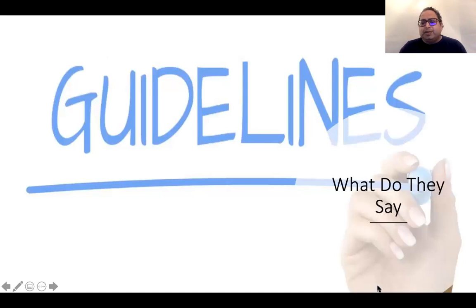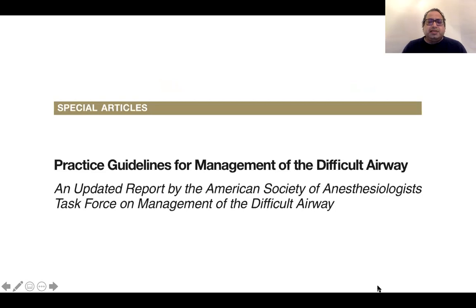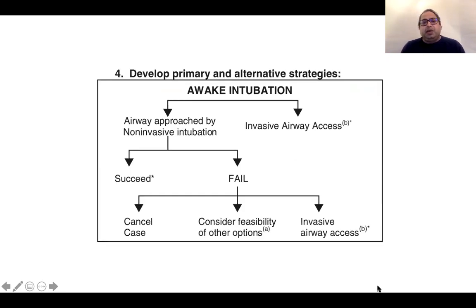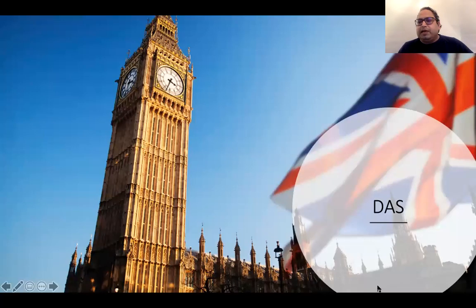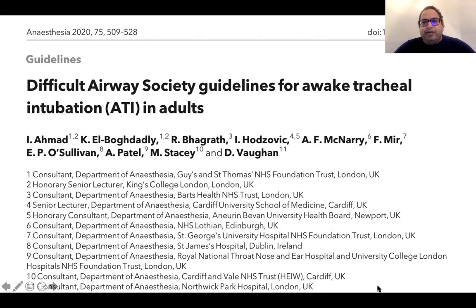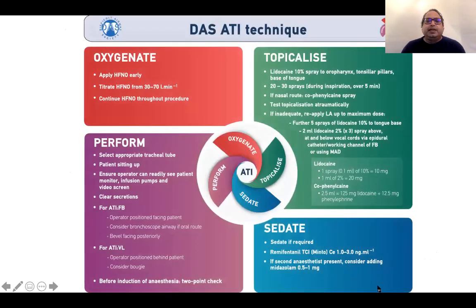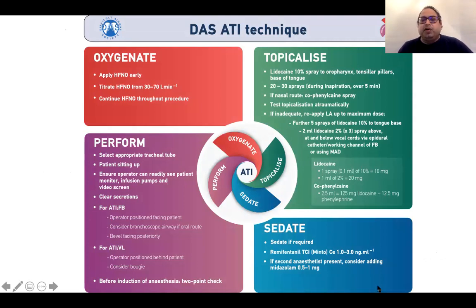What do our guidelines say? The ASA practice guidelines for management of the difficult airway mention the need for a method of intubation in patients with a difficult airway but do not specify how it should be done — that is left to the anaesthetist. The Difficult Airway Society published guidelines recently, just last year, and they do address this. They discuss oxygenation, topicalization, sedation, and performance.